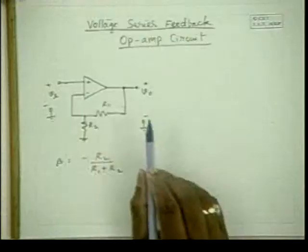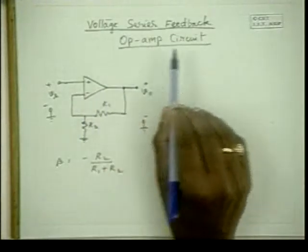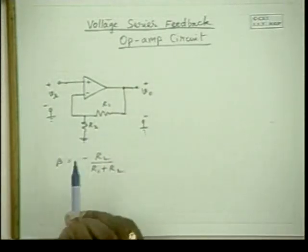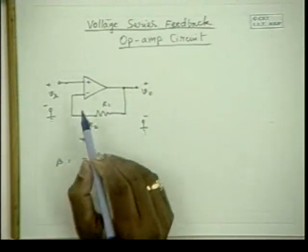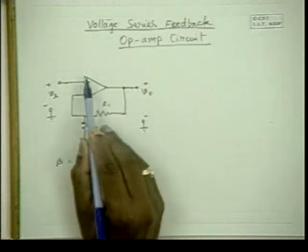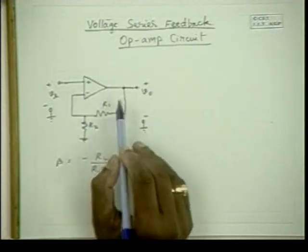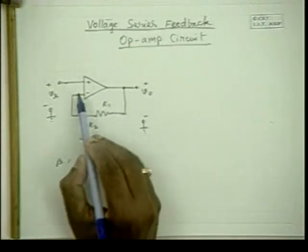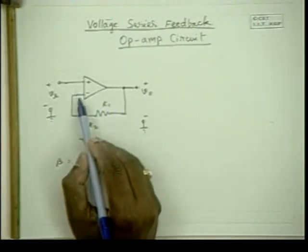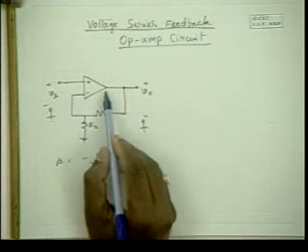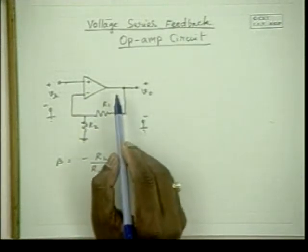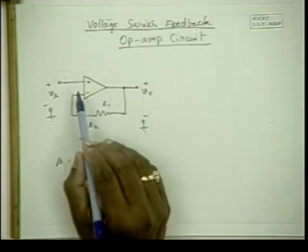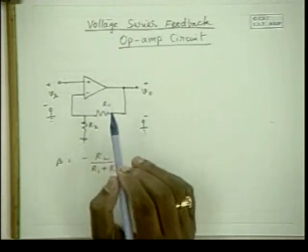Please look at this picture. This is an example for voltage series feedback using an op-amp circuit. This is an operational amplifier — an amplifier with very high voltage gain and very high input impedance. Ideally, the input impedance is infinity, the output impedance is 0, and the voltage gain is infinity.